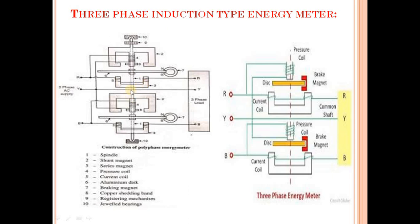This is the second shunt magnet, and this is the second series magnet. Here are two sets and here are two aluminum discs. This is the second brake magnet. There is a common spindle and these are the jeweled bearings. Here is the three-phase supply — this is the three-phase induction type energy meter.